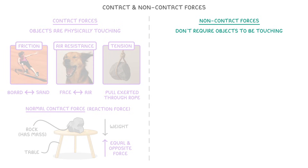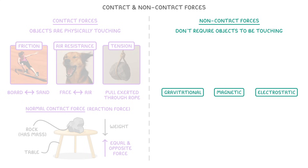Now, non-contact forces don't have to be touching, and so they can act through empty space. The three types you need to know are gravitational force, magnetic force, and electrostatic force. When we talk about these non-contact forces, we often talk about them as fields of influence around an object, because the forces can act on anything in that surrounding area.